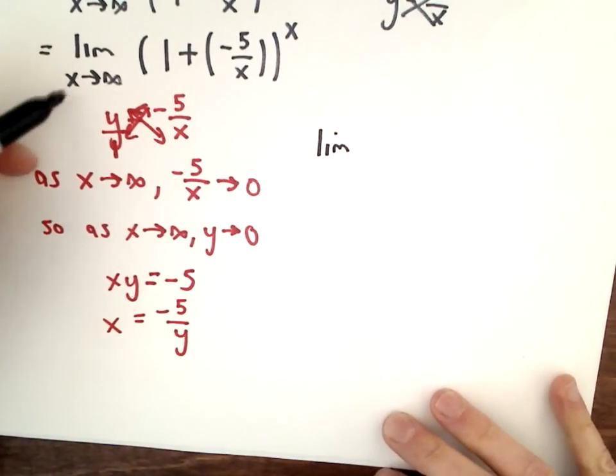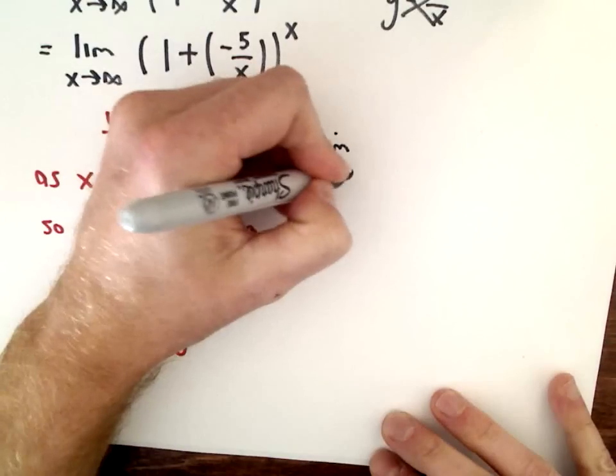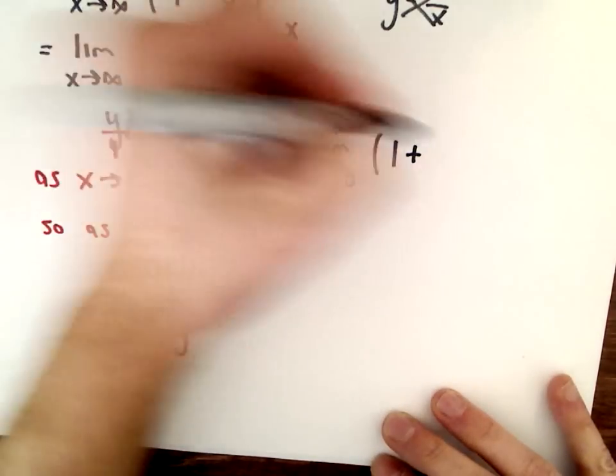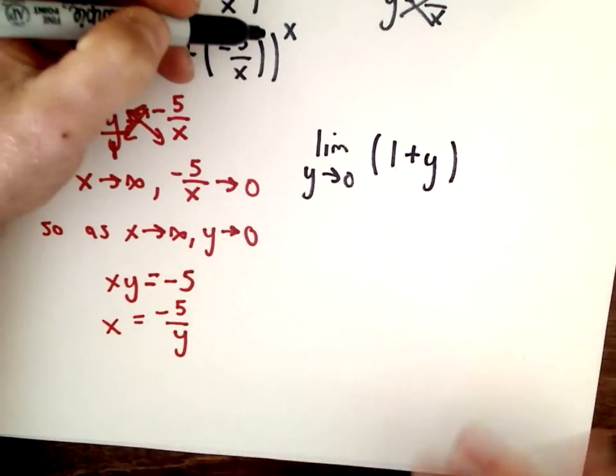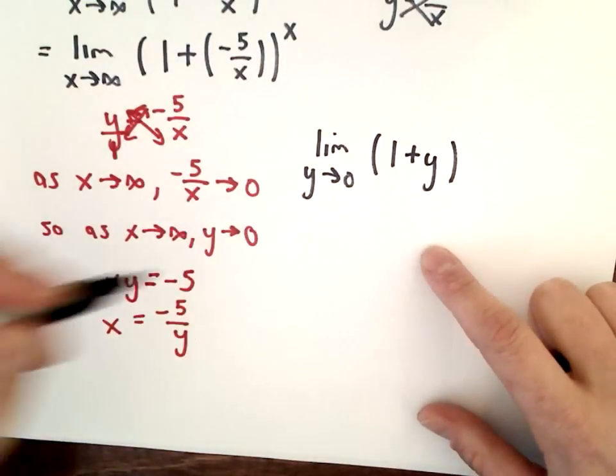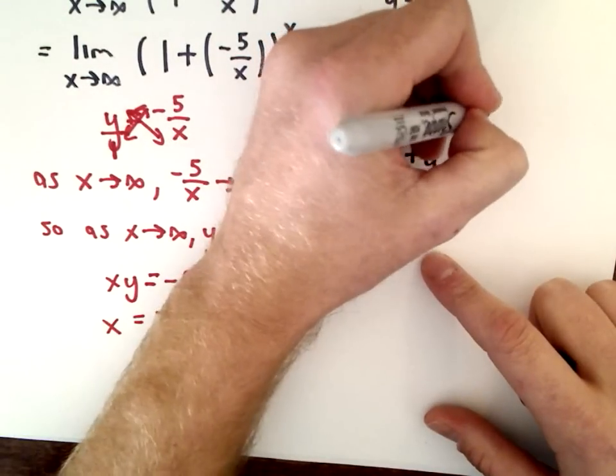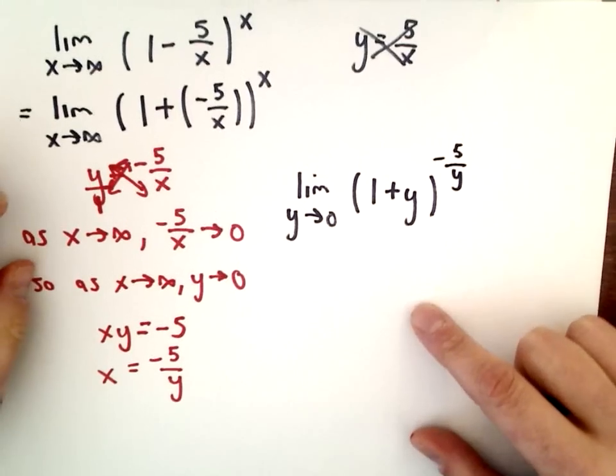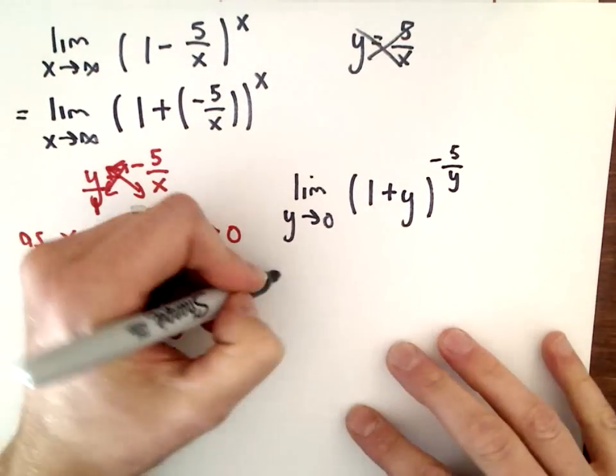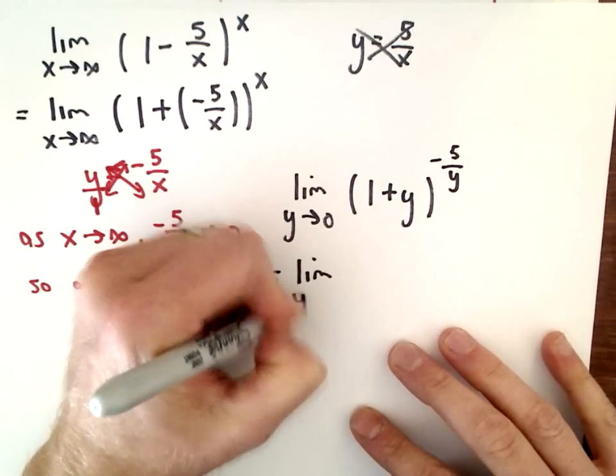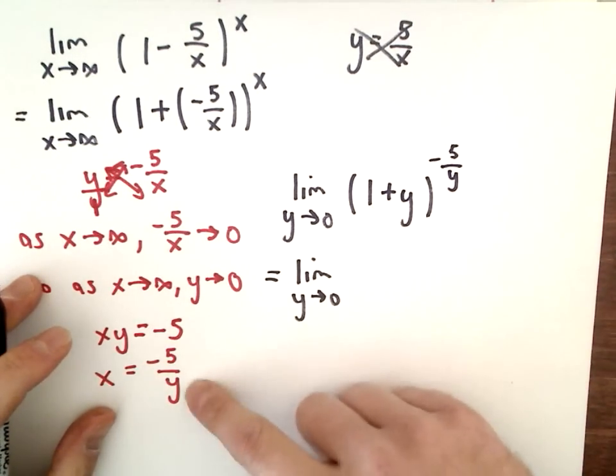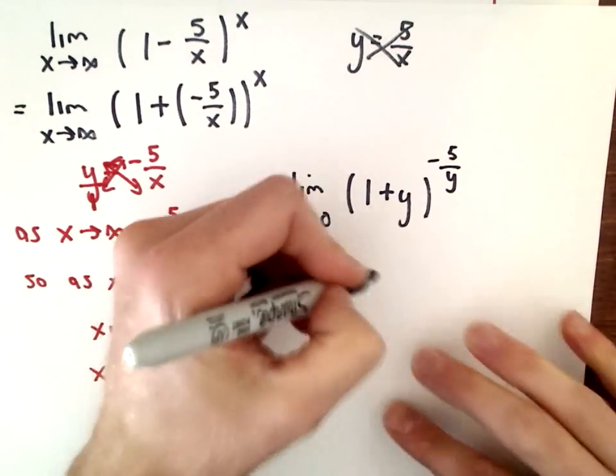We have the limit as y approaches 0 of (1+y)^(-5/y). We've now done our relabeling. This relabeling process certainly works on other limit problems as well. It's not unique to problems involving e. This relabeling process is actually a pretty useful little trick.